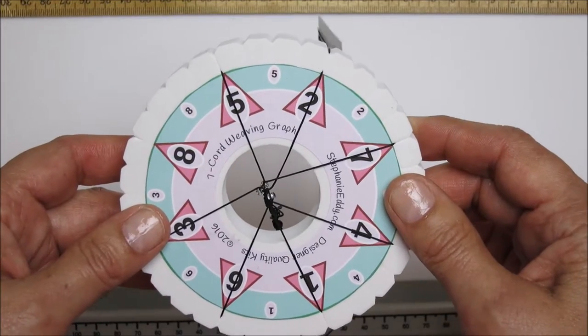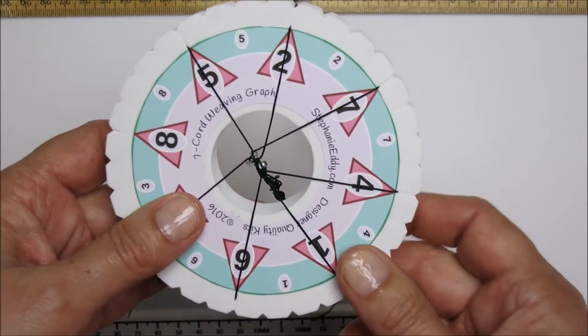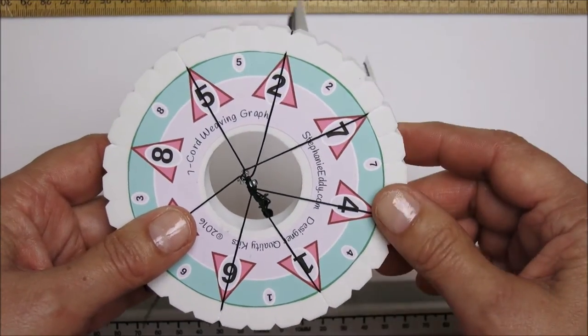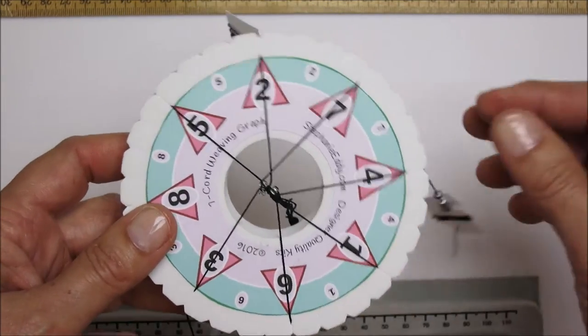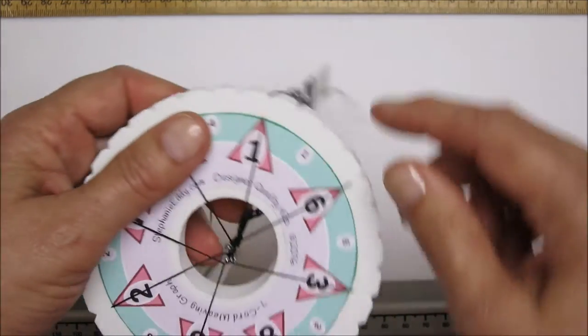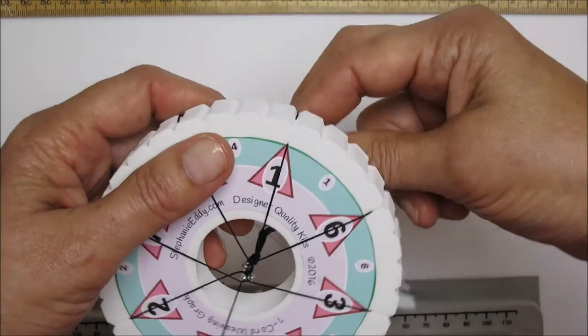Now part of this pattern is done with your beads on a bobbin and the other part is done one bead at a time. So once you have your bobbins loaded, you'll just go ahead and start. You will be starting on position number one.